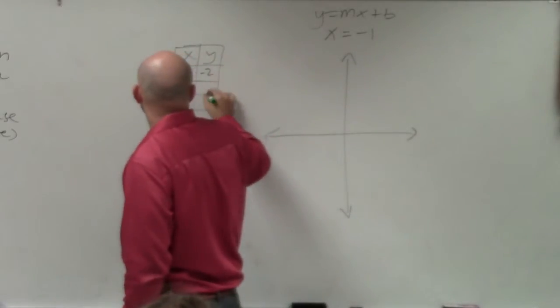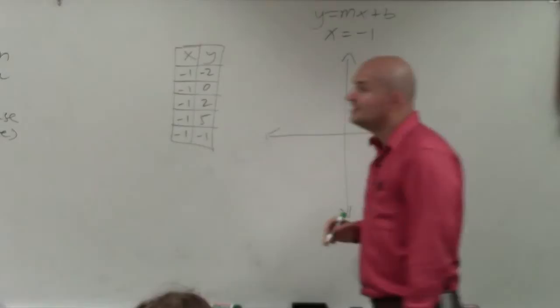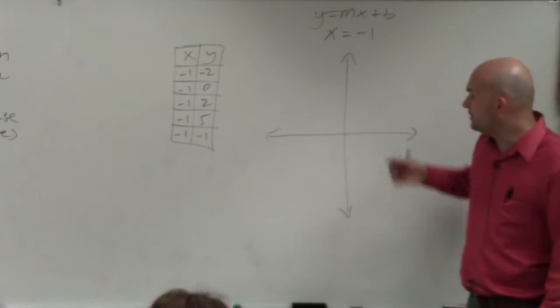So y could be negative 2, y could be 0, y could be 2, y could be 5, y could be negative 1. It doesn't matter what y is. x is always equal to negative 1.